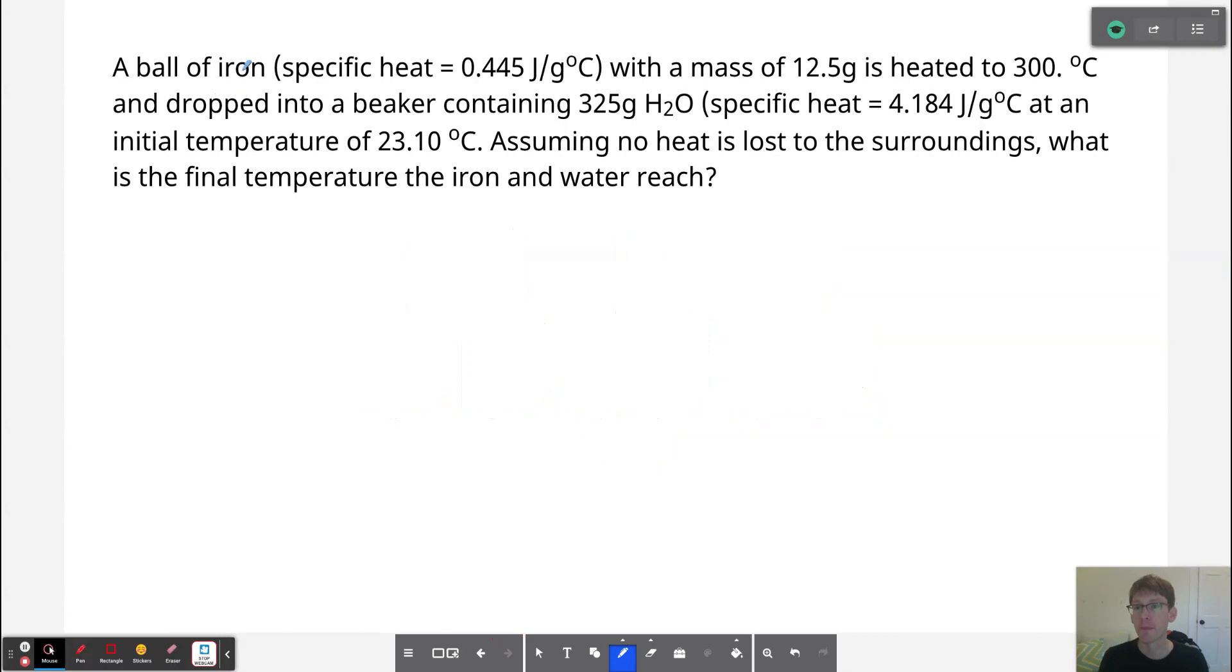So let's solve the problem. We have a ball of iron and I'm actually going to draw this. We've got a ball of iron with a specific heat of 0.445 joules per gram degree Celsius. We know its mass is equal to 12.5 grams. We know that its initial temperature is 300 degrees Celsius. And we know that the final temperature...well, we don't know because it says what is the final temperature that the iron and the water reach together. With thermal equilibrium, of course, we're going to have everything be the same final temperature.